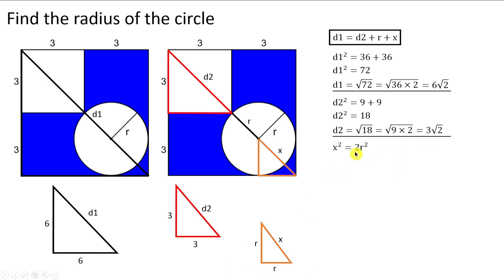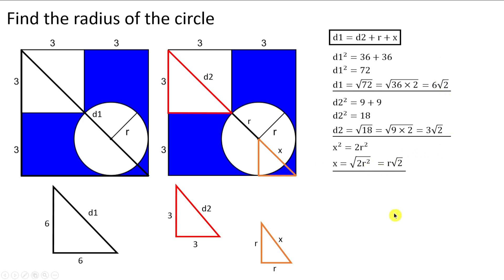Using the same reasoning for x: x² = r² + r² = 2r². So x = √(2r²). Taking r² out of the square root gives x = r√2. We have now found d1, d2, and x.